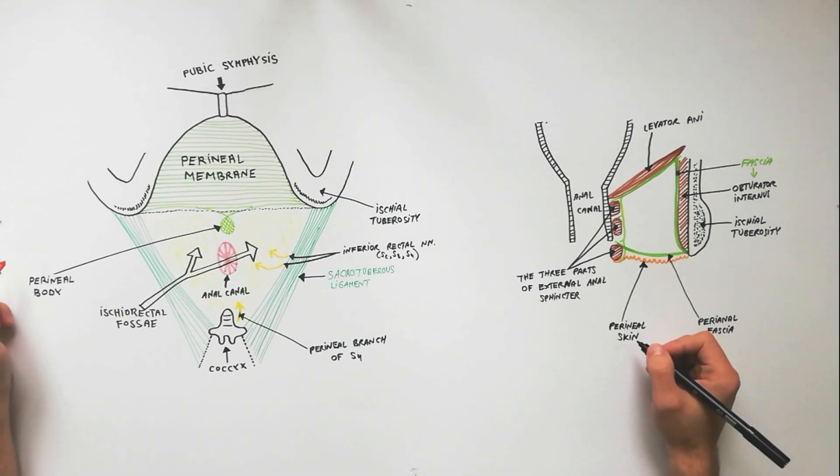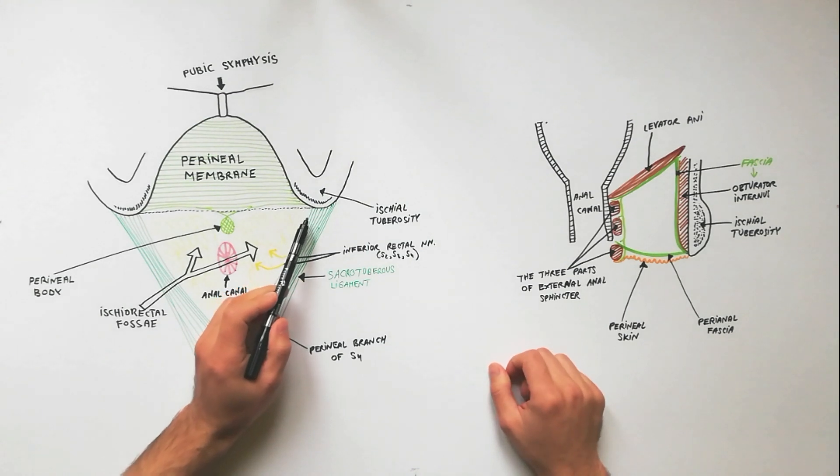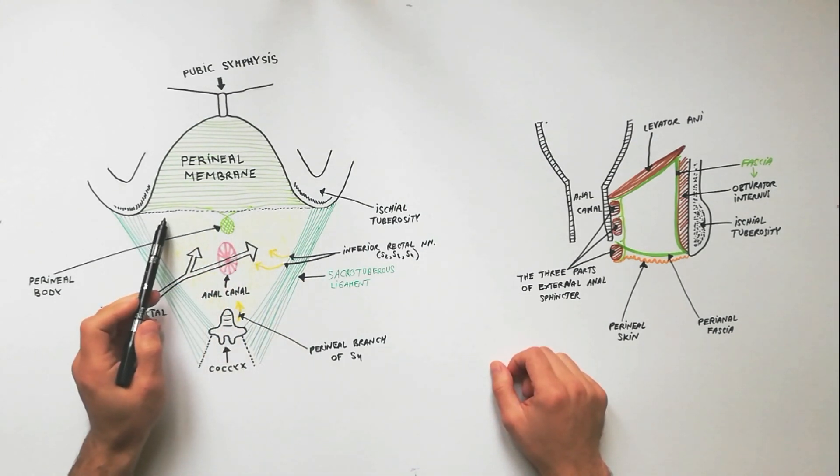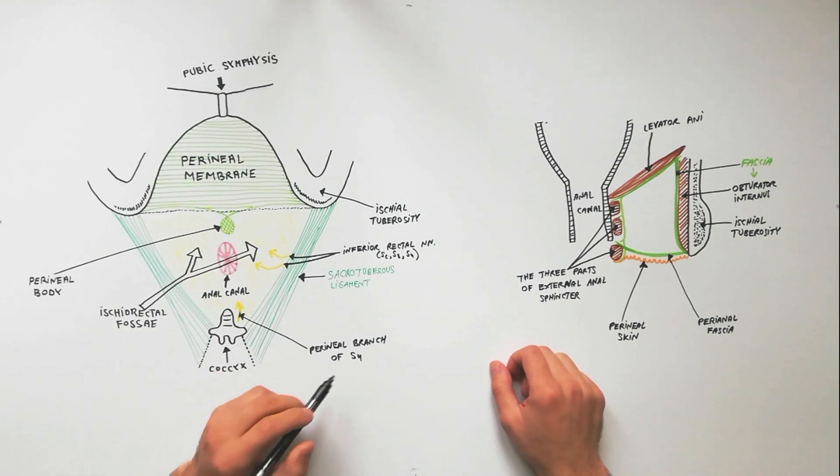As we clearly observe on the first drawing, the ischiorectal fossae is bounded anteriorly by the posterior border of the perineal membrane and posteriorly by the sacrotuberous ligament on the posterior surface of which is gluteus maximus.